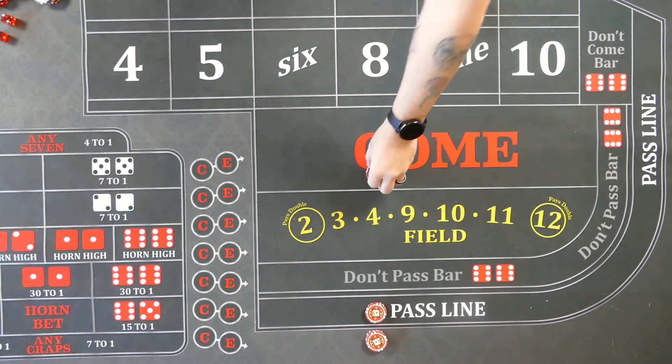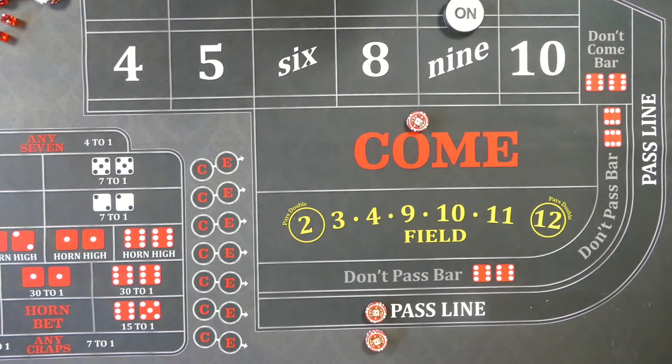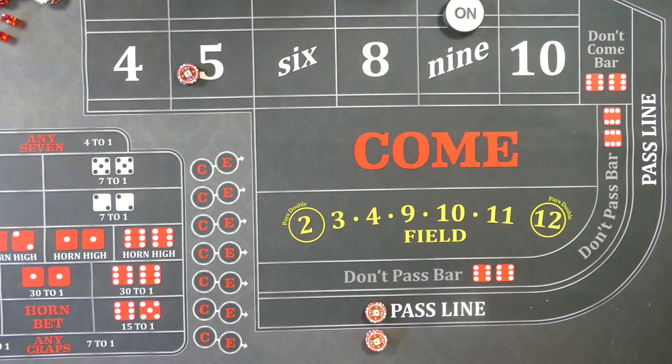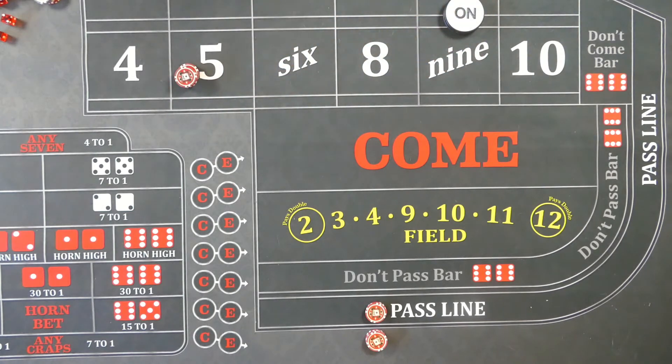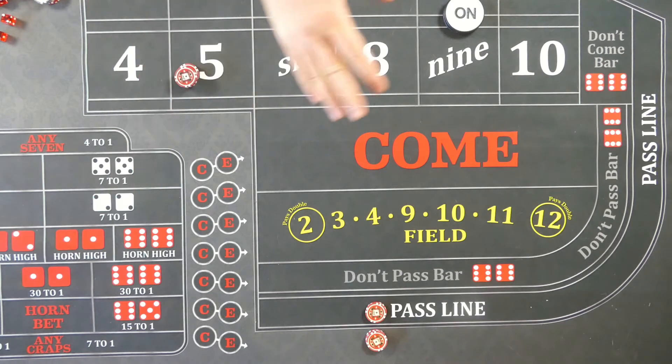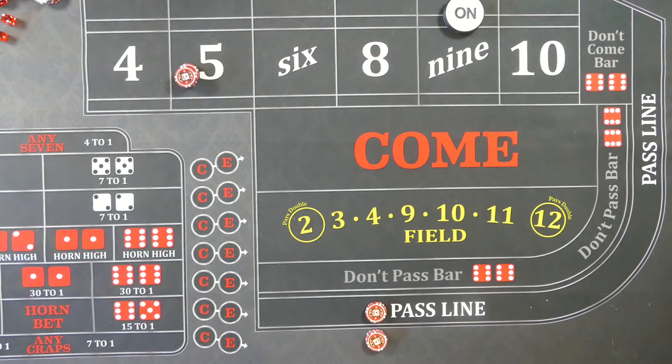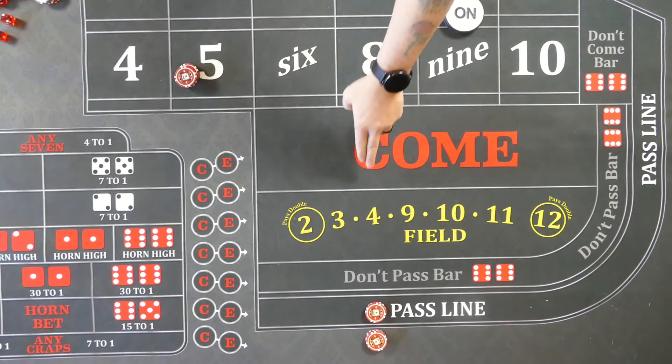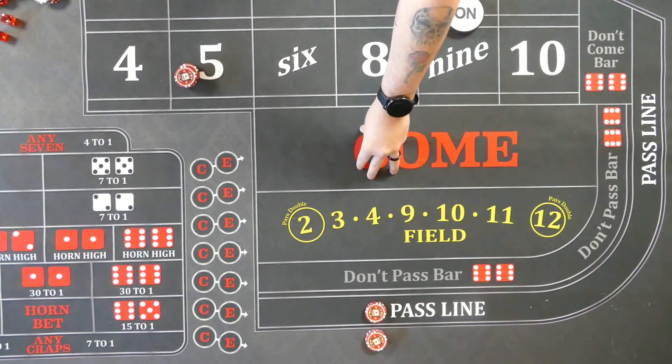Now, come bets. Instead of coming to the come, letting the dice pick your number for you and then moving to whatever number rolls, you can say 'I want to put the five with 20 odds.' You are allowed to skip through the come just like you can come down onto the pass line after there is a point established - basically picking your point. You can do the same thing with a come bet.